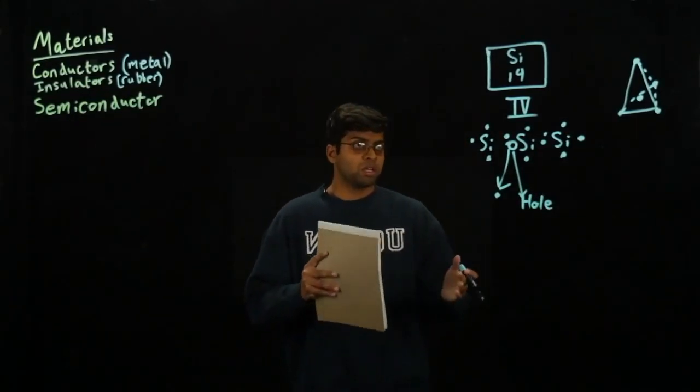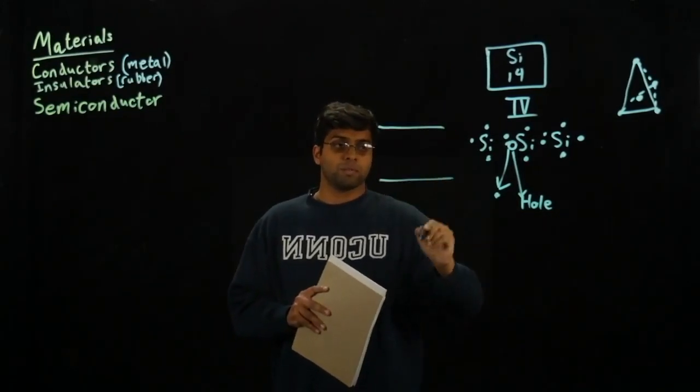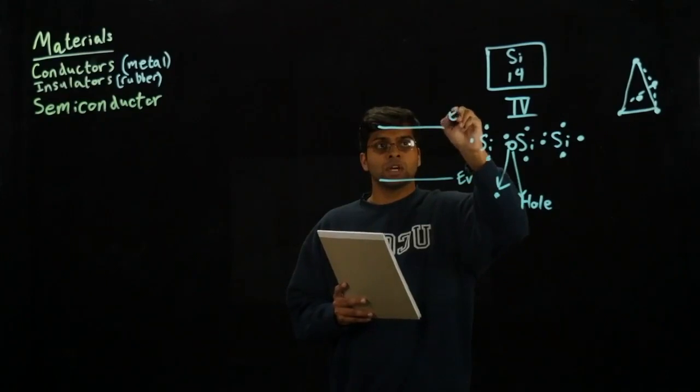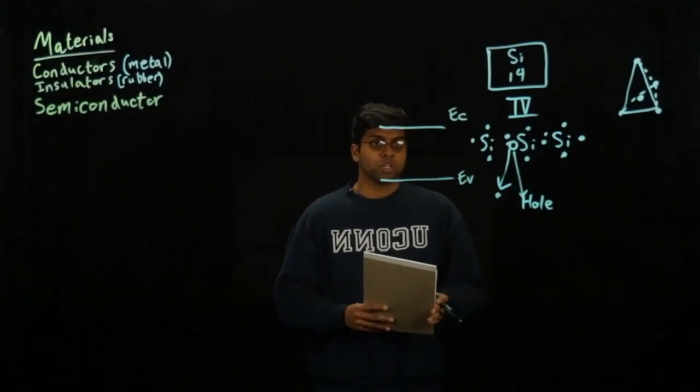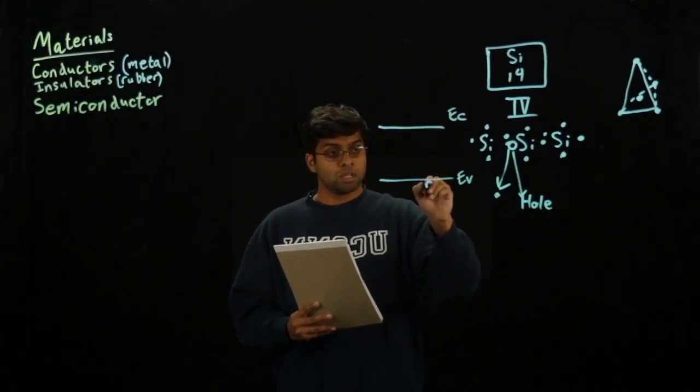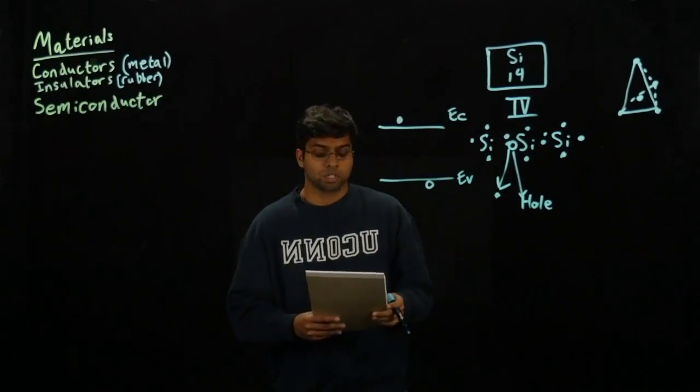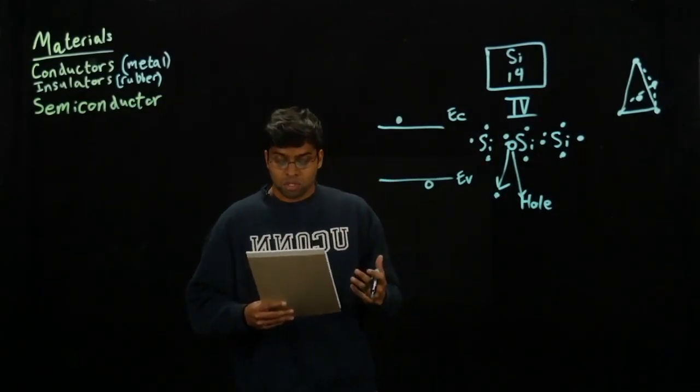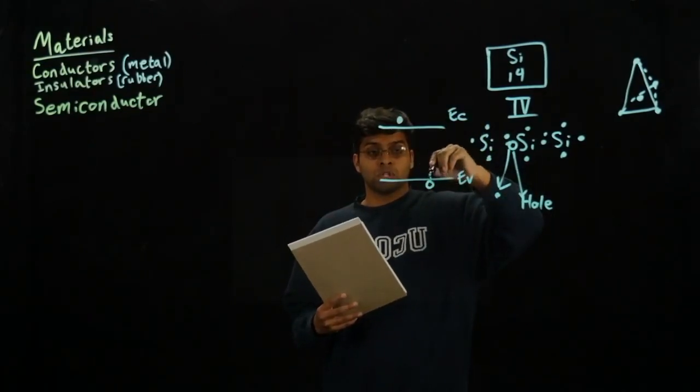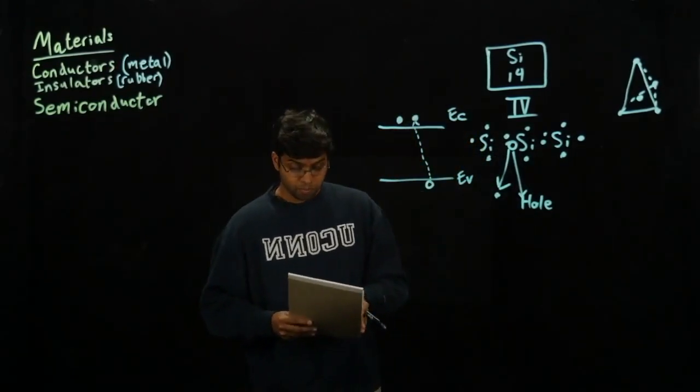One way that engineers are able to represent this is with an energy band diagram. If we look at an energy band diagram, we have the bottom layer which is the valence band and the top layer which is the conduction band. Holes, these positively charged carriers, are going to reside below the valence band, while above the conduction band is where you find your electrons. When you apply some sort of bias, electrons will jump through this barrier and reside within the upper layer and they leave behind a hole.